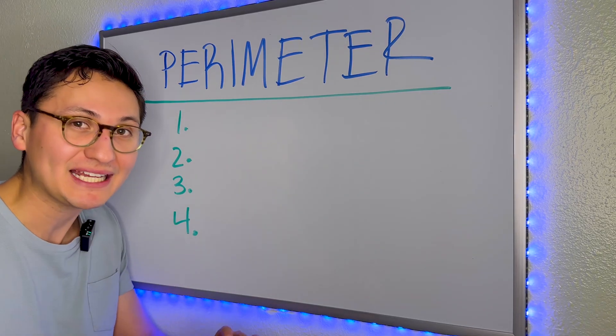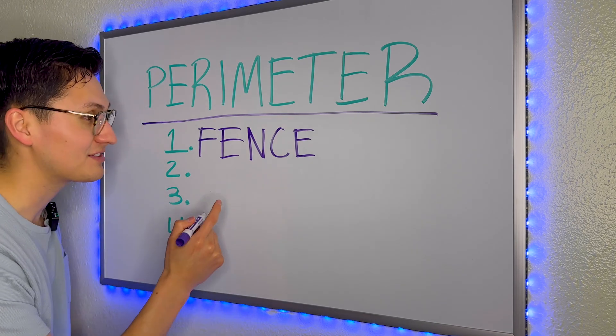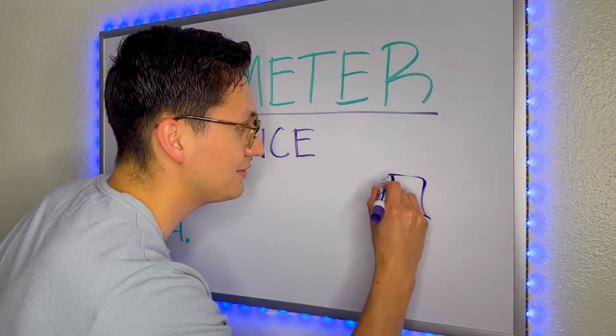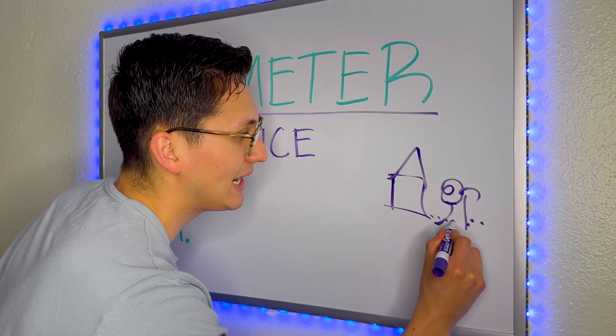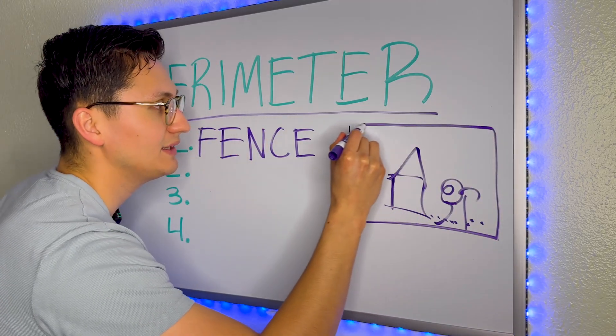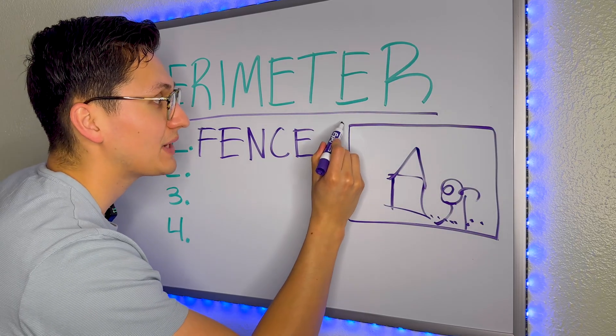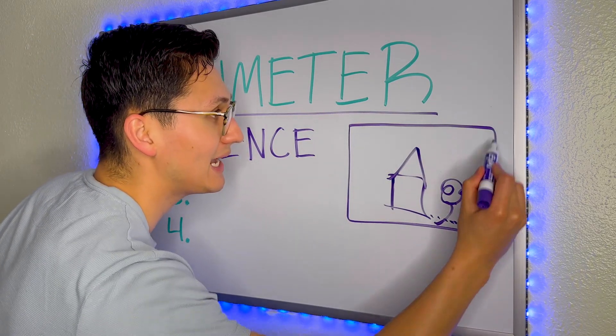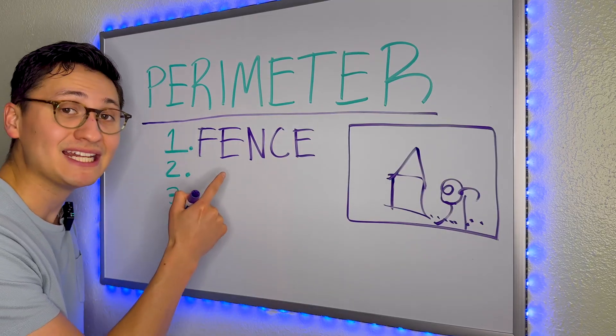The first word is going to be fence, because typically we have a house, we have a tree, we have beautiful grass, but around the house there's typically a fence. In order to know how much fence you need around the house, you need to know the perimeter. So a keyword would be fence.